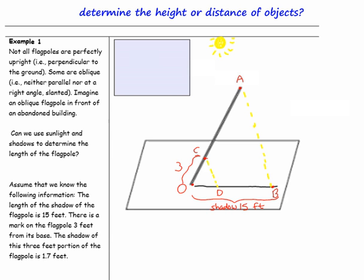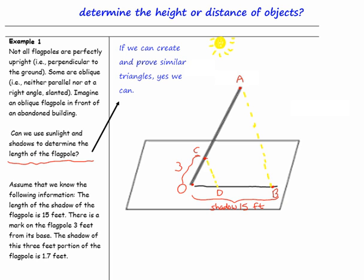It's important to note that those lines are parallel — AB is parallel to CD. The reason that's important is because we will use corresponding angles to prove similarity. So back to our question: can we use sunlight and shadows to determine the length of the flagpole? If we can create and prove similar triangles, yes, we can.